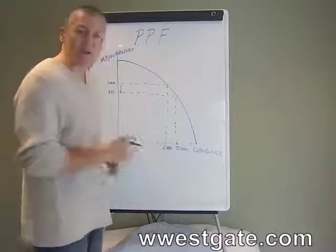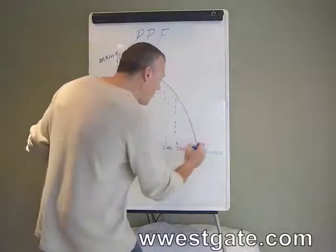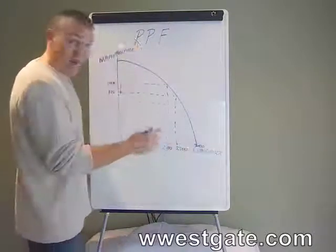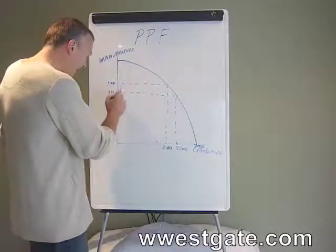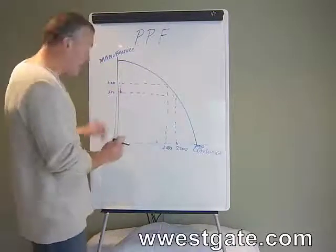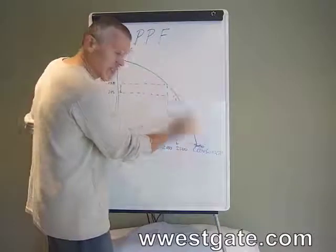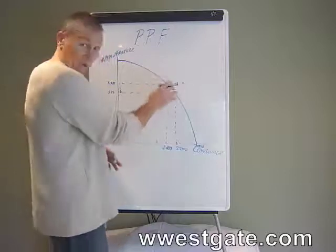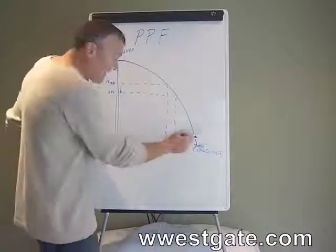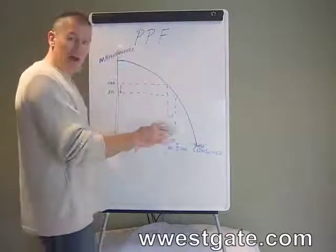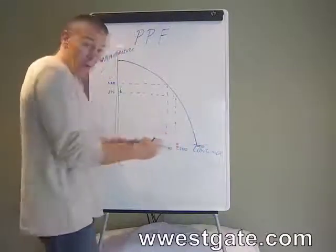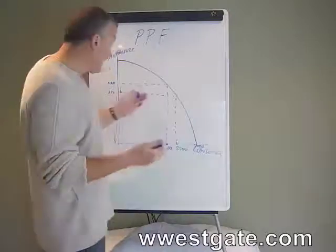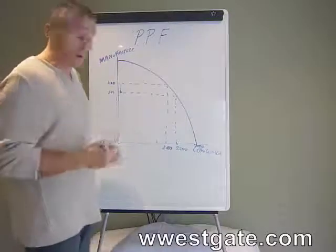Likewise, let's say the economy decides it wants to go completely to consumer goods — out to 3,000 consumer goods. What would we have to give up in order to get that extra 500? We'd have to give up 800 of that. That's a huge give up, because you can see the gradient of this curve is shifting — it's becoming imperfectly substitutable. You're not getting a one-for-one. Up around this level you were, but out at this level you were not. So even though this is considered to be just as efficient, it's a different value judgment society has to make. At least the PPF allows you to do that calculation.